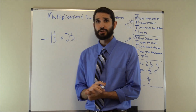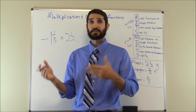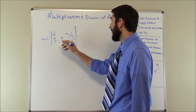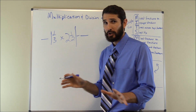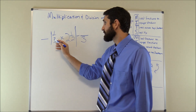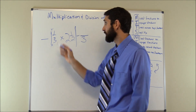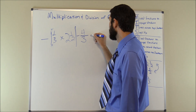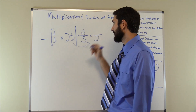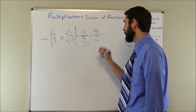For our next problem: negative one and one third times two and one half. We follow MITS — M and I means converting mixed fractions to improper fractions, and both of these are mixed numbers. We carry the negative sign. For the first one: denominator carries over as three, then three times one plus one equals four, giving us negative four over three. For the second: denominator is two, then two times two plus one equals five, giving us five over two.